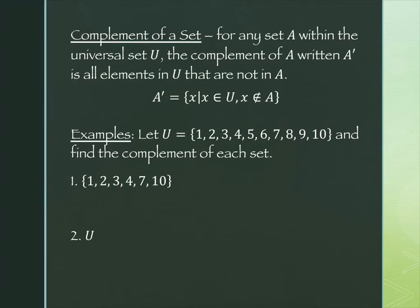The next thing we're going to look at is what a complement is. For any set A within the universal set U, the complement of A — your book uses the notation A-prime, kind of like an accent mark on the end — is all elements of U that are not in A. The set-builder notation is: A-prime equals the set of x such that x is in U and x is not in A.